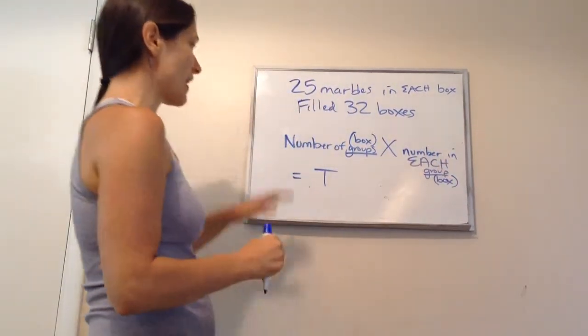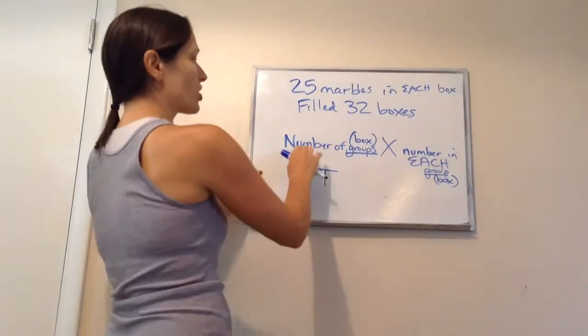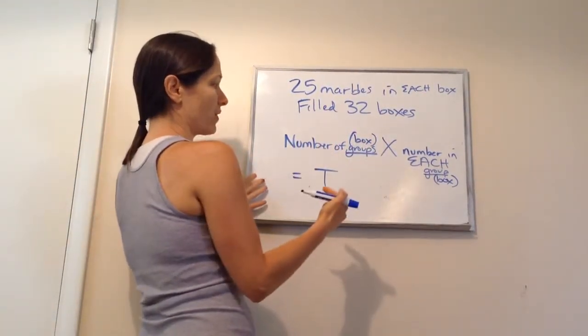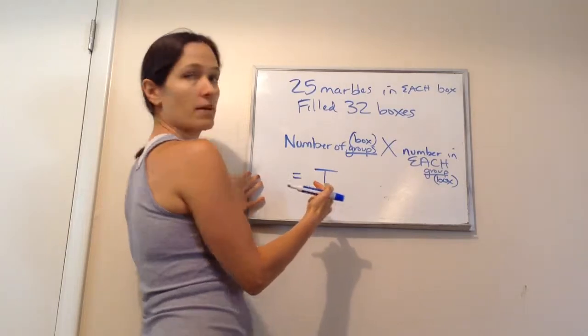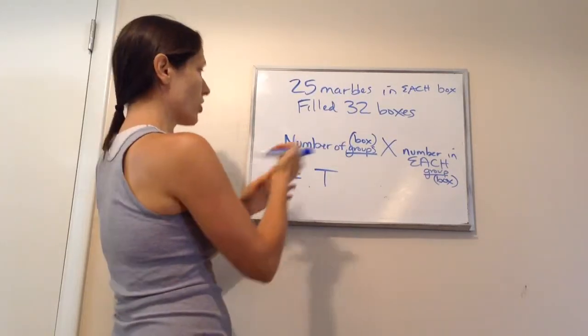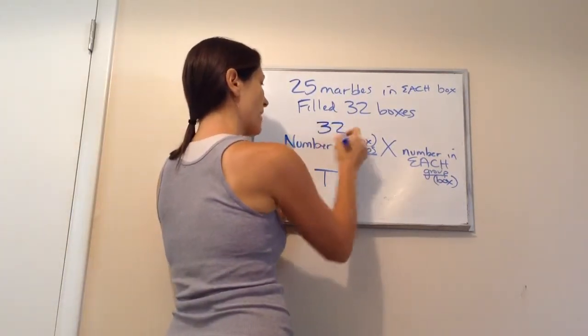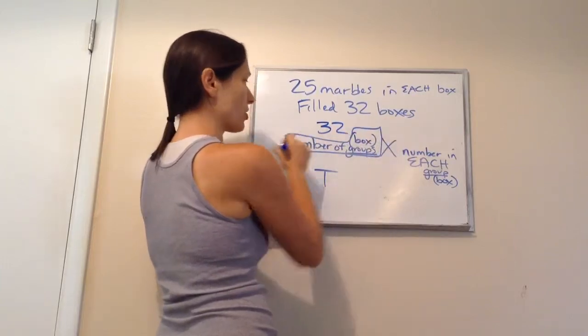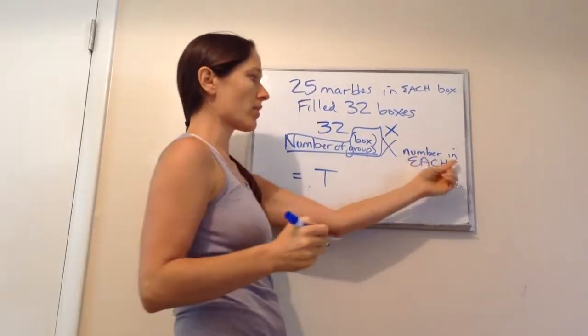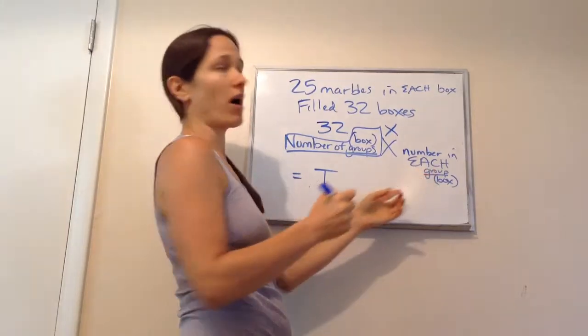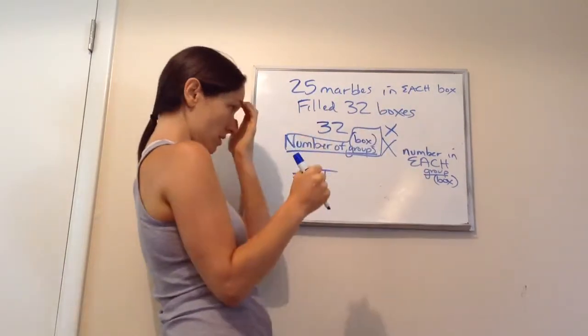So the number of groups times the number in each group. Now, as I said, the groups is boxes in this one. So how many boxes do we have? Based on our information. 32. So 32 is my number of boxes or number of groups times number in each group or each box. How many do we have in each box? 25.